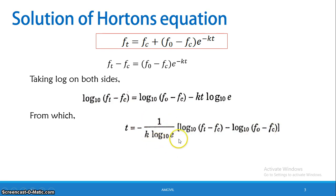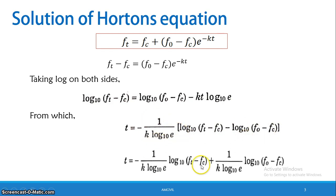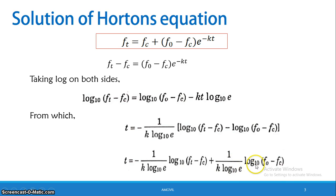Rearranging further: T equals minus 1 divided by K times log(e), multiplied by log(Ft minus Fc), plus 1 divided by K times log(e) times log(F0 minus Fc).